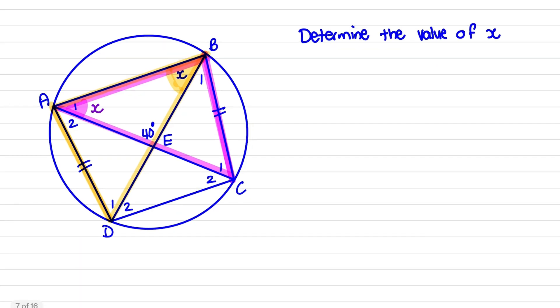We can say that angle B is equal to angle A1 which is x, and the reason is equal chords equal angles. Because when the two chords are equal, the angles formed at the circumference would be equal.